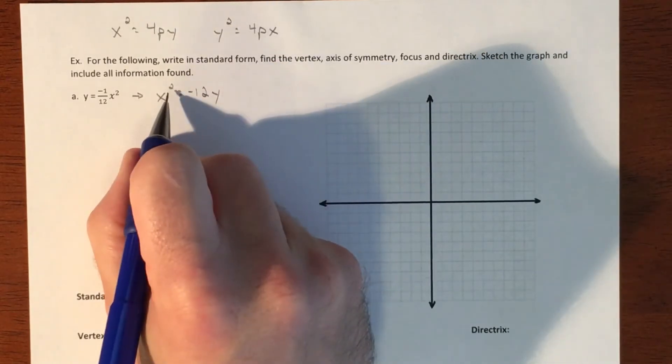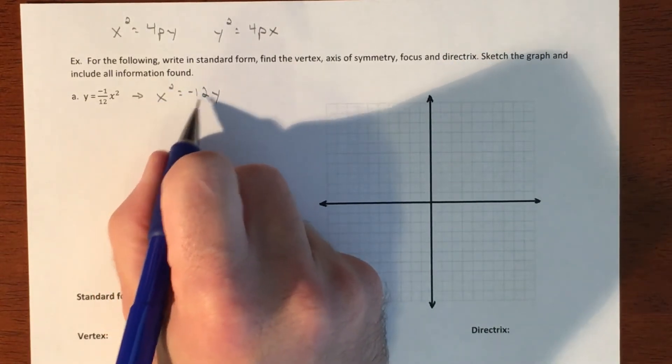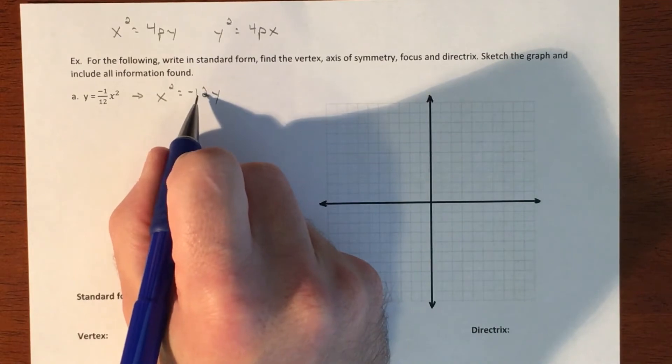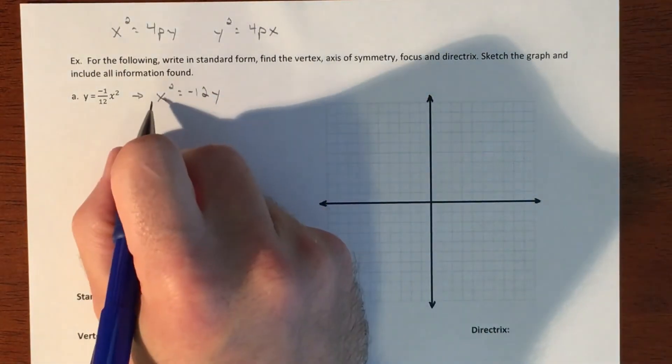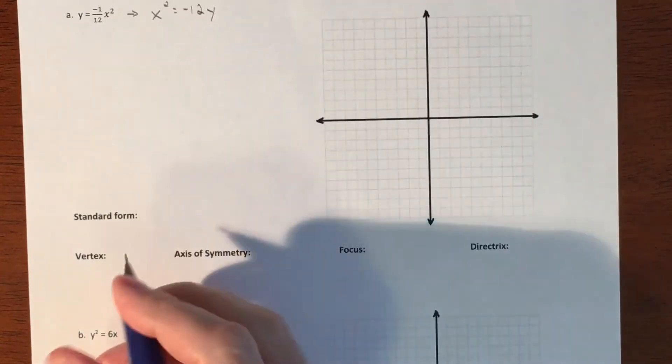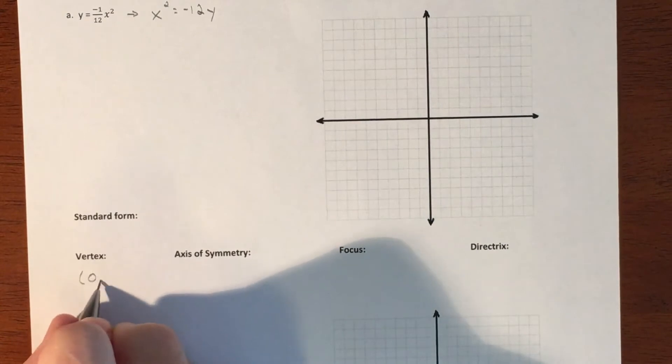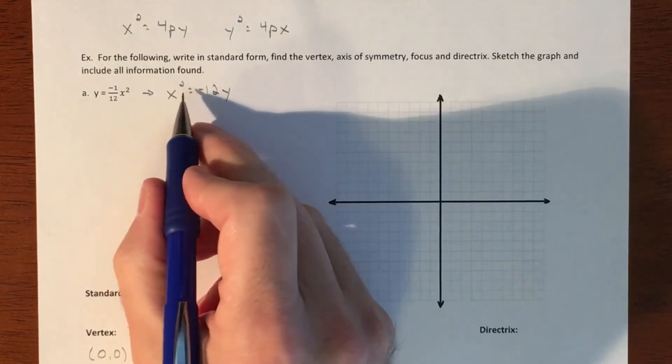All right, so this is telling us that it's an up or down parabola. And then this is going to help us figure out where we're going to put our vertex, and where we're going to put our focal point. So right now, our vertex is just going to be at (0, 0). And the reason is, is that we don't have any adding or subtracting pieces on here. We don't have any h or k's.